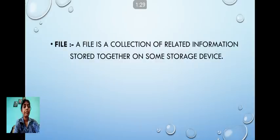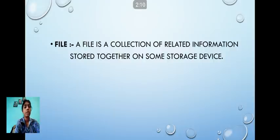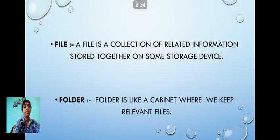Before starting, we should know what is a file. A file is a collection of related information stored together on some storage device. For example, when you save notes related to a particular chapter — say, types of computers — all the related content is collected in one chapter, so that one chapter can be considered as a file. A folder is like a cabinet where we can keep our relevant files.